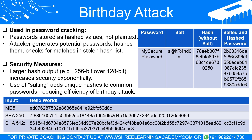Another protection mechanism is the use of salting in password storage. A salt is random data used as an additional input to a hash function. By salting a password, even common passwords end up with unique hashes, thereby reducing the efficiency of pre-computed tables of hashes — also known as rainbow tables — that an attacker might use in a birthday attack.